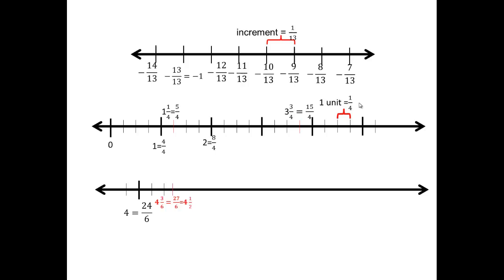How about this one? Now I'm making my increment of a sixth. So if you look over here from here to here, I have 24 sixths is 4. So this would be 4 and 1 sixth, 4 and 2 sixths, 4 and 3 sixths.